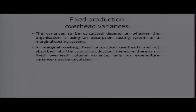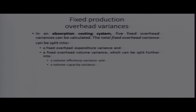For fixed overheads, the fixed overheads variance is calculated depending on whether the organization uses absorption costing or marginal costing. In marginal costing, fixed production overheads are not absorbed into the cost of production, so there is no fixed overheads volume variance — only an expenditure variance is calculated. In absorption costing, five fixed overhead variances can be calculated: the total fixed overheads variance, which splits into the expenditure variance and volume variance; the volume variance further splits into volume efficiency and volume capacity.